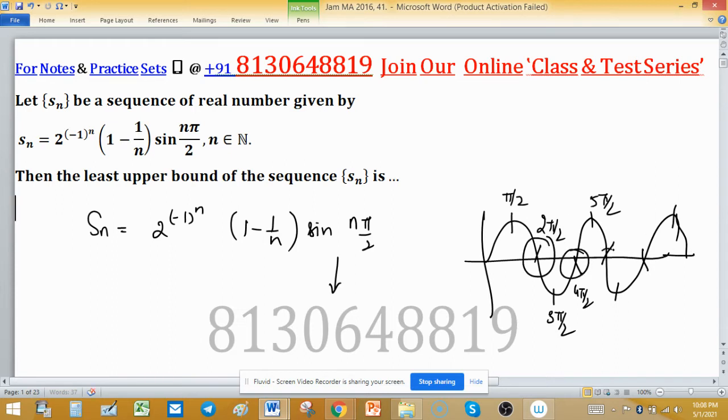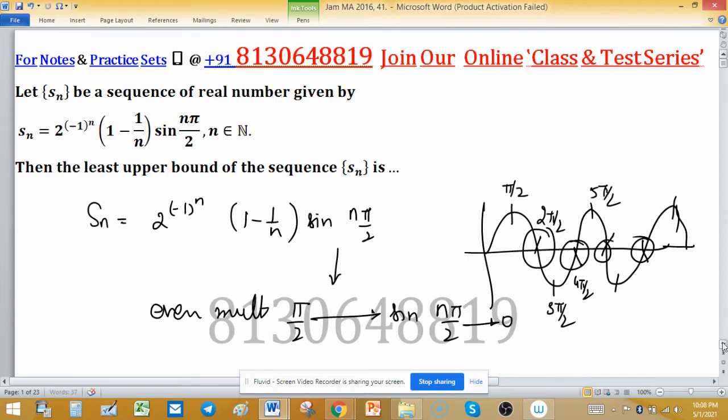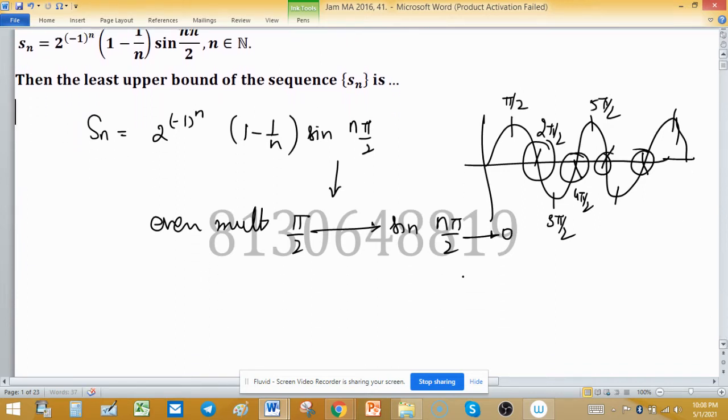So even multiples of π/2 will have sine value of 0. So the second term will be 0, fourth term is 0, and sixth term is 0.